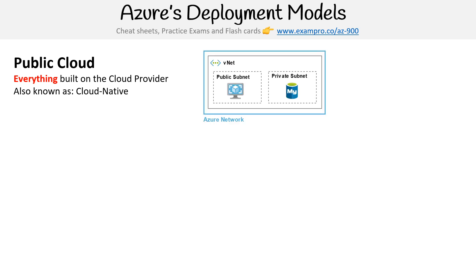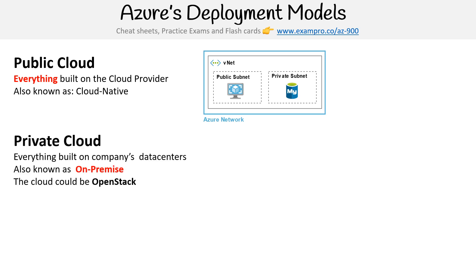Here I have an architectural diagram where we have a network on Azure. Within that network, we have a virtual machine running and a database running. So that would be an example of public cloud.